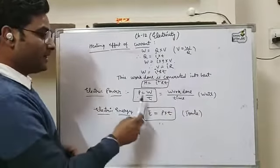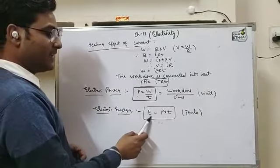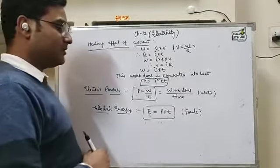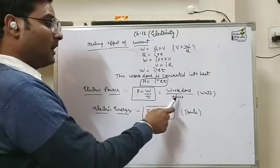Electric energy: By multiplying power into time, we get electric energy, and the unit of electric energy is Joule.